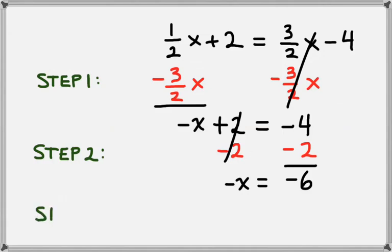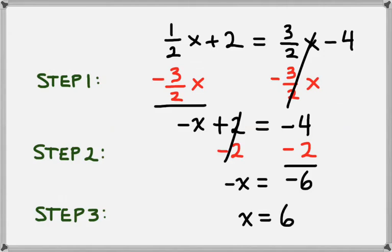Our final step is we have negative x, so we need to flip the signs on both sides, which is the same thing as multiplying by negative 1. So on the left, we get x, and on the right, we get 6. So our answer is x equals 6.